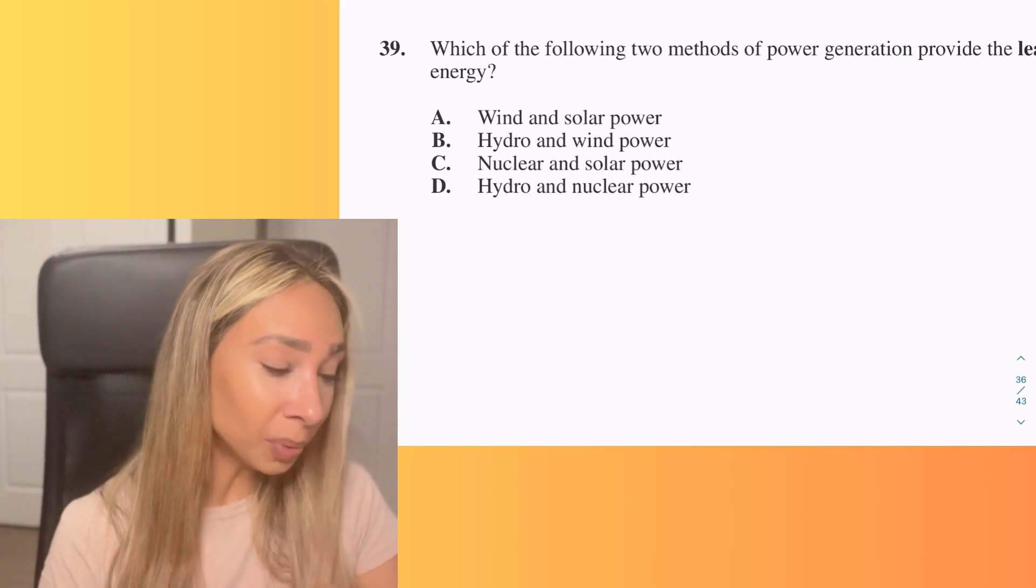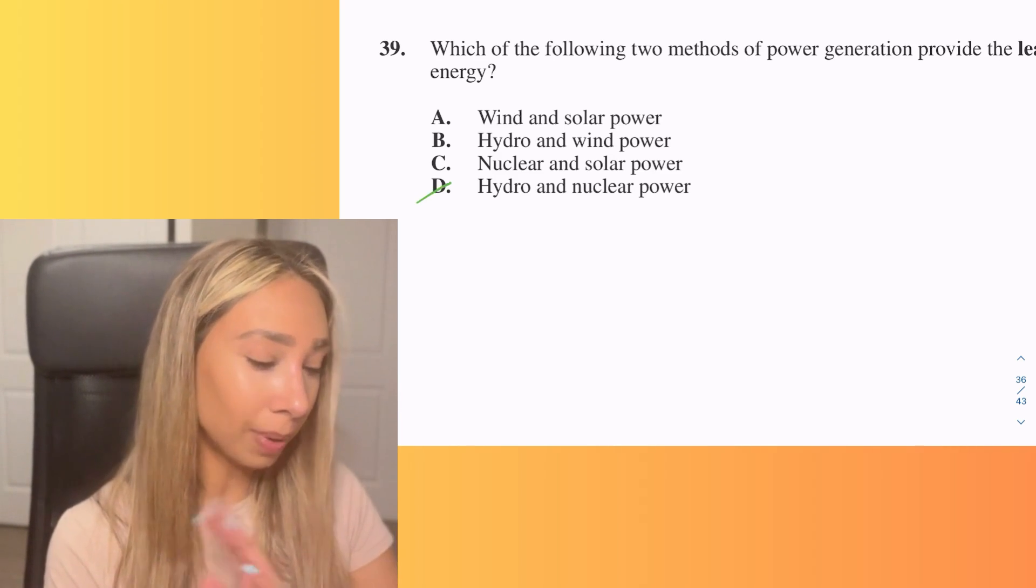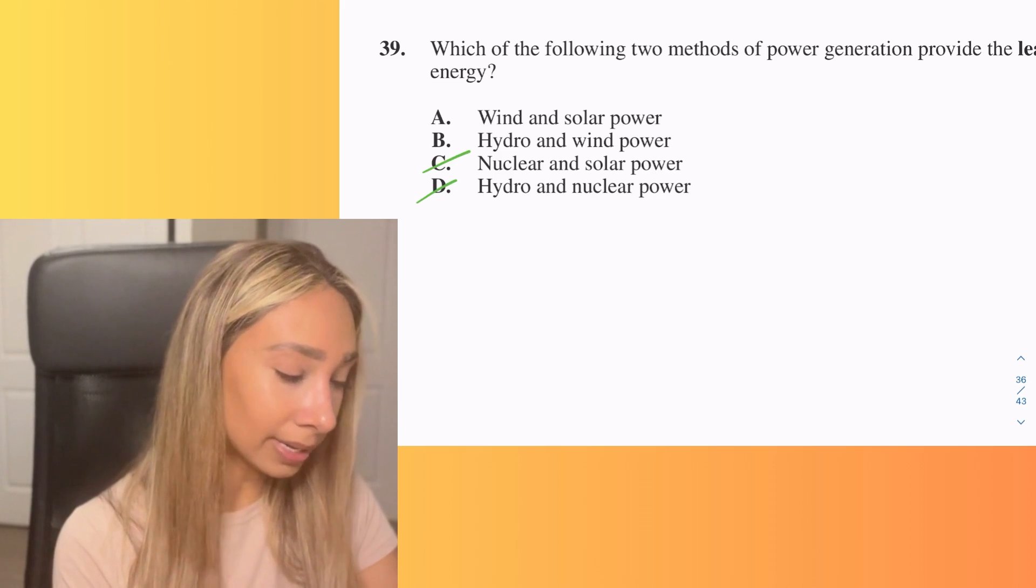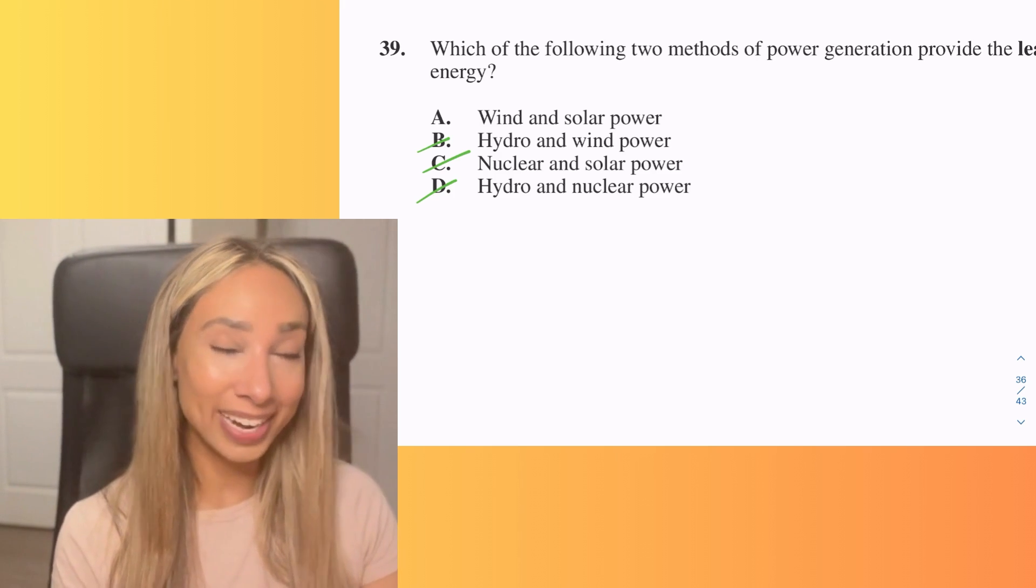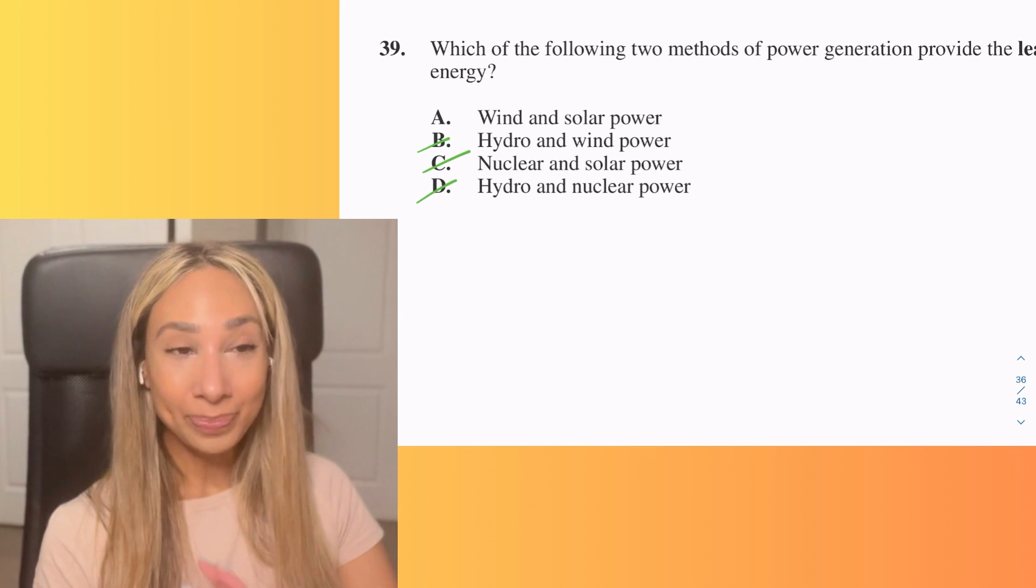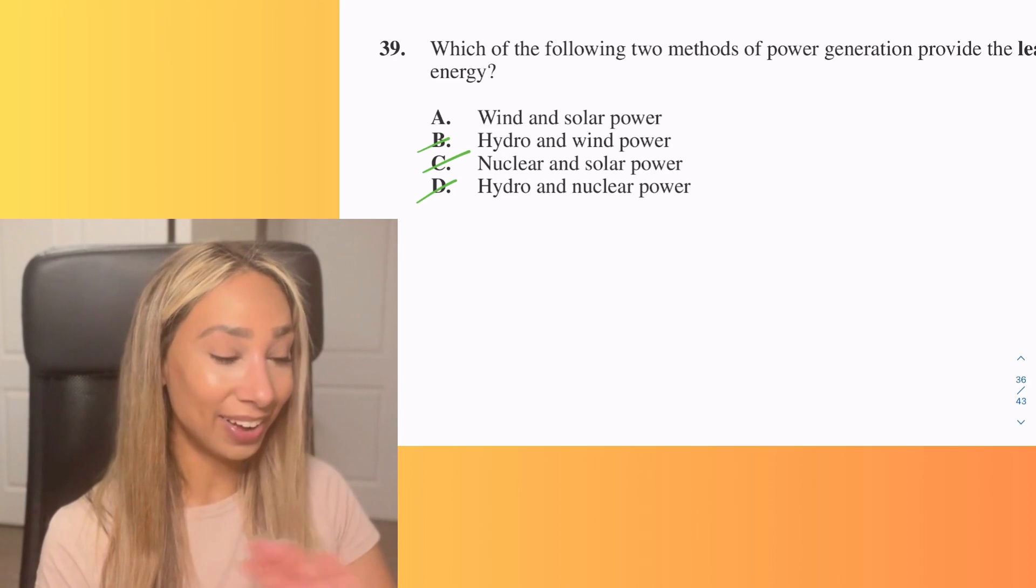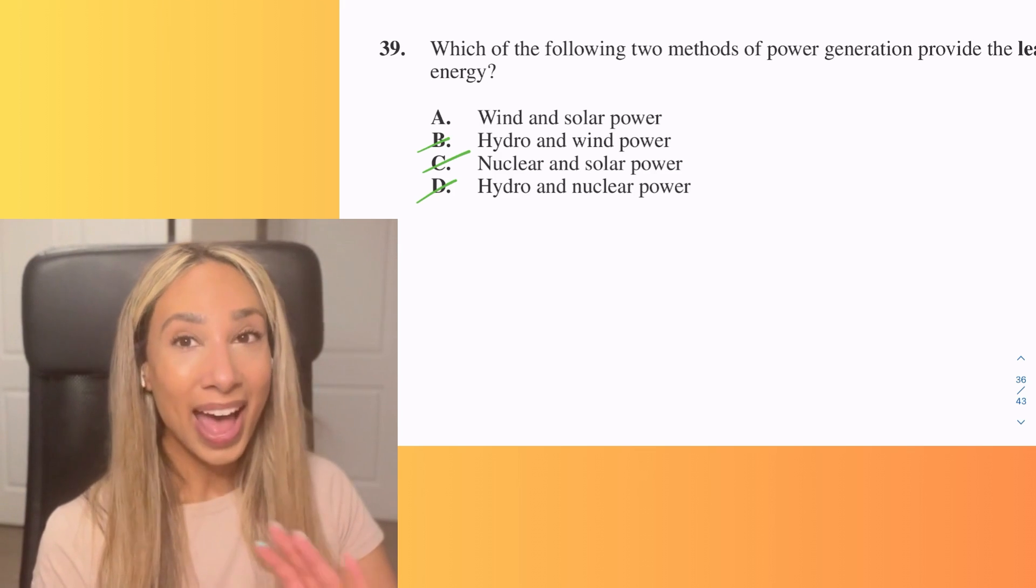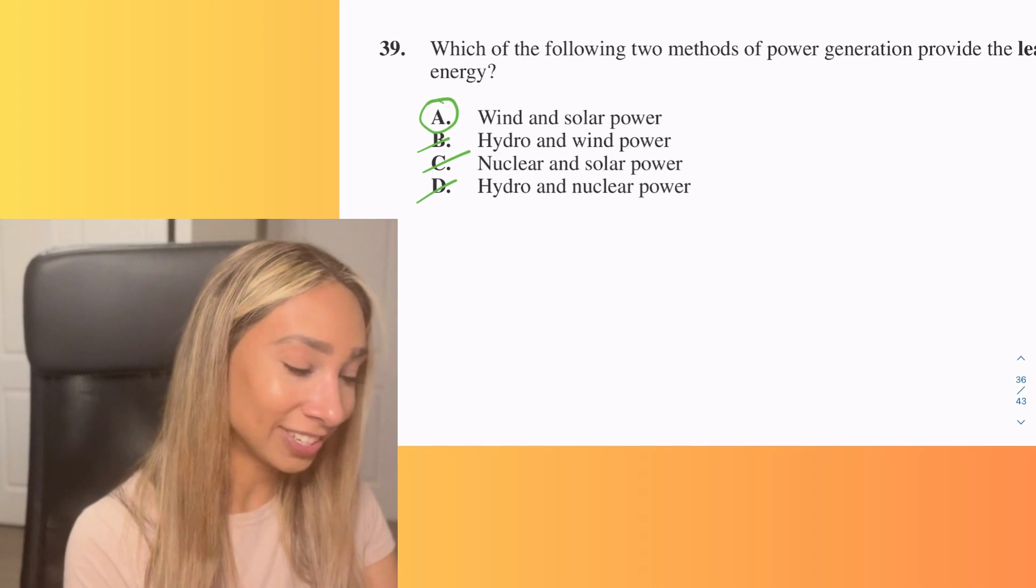So hydro and nuclear, those are pretty efficient, right? As long as the water is running and the nuclear power is going, we're good. That leaves us with only option A. And the reason for that is if it's not windy, you're not going to have the consistent amount of energy being put through. And then of course with Alberta in our winters, it's not going to be consistent to use solar power. So that is going to be the answer there.